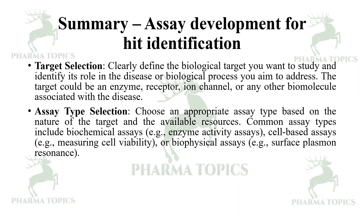For assay type selection, choose an appropriate type of assay based on the nature of the target and the available resources. Common assay types include biochemical assays such as enzyme activity assays — for example, alpha-glucosidase inhibitory assay or alpha-amylase inhibitory activity assay — cell-based assays measuring cell viability such as the MTT assay, and biophysical assays such as surface plasmon resonance.